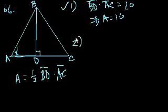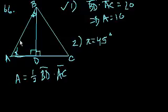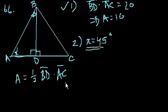Statement number two: x equals 45 degrees. We can do some angle reasoning — if this angle is 90, and x is 45, then the remaining angle is also 45. But this tells us nothing about the lengths of any sides. The triangle could be a million miles tall or a nanometer tall — you can scale it up or down. Angle information alone is useless here. So statement one alone is sufficient; the answer is A.